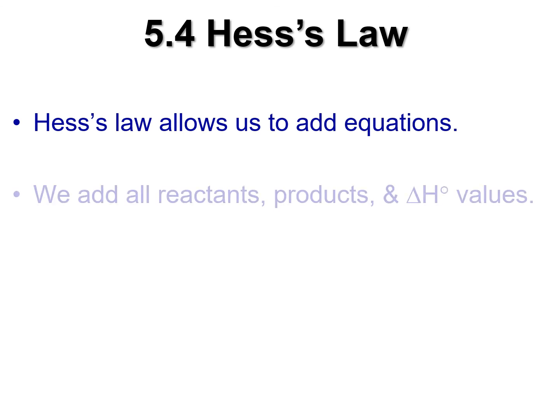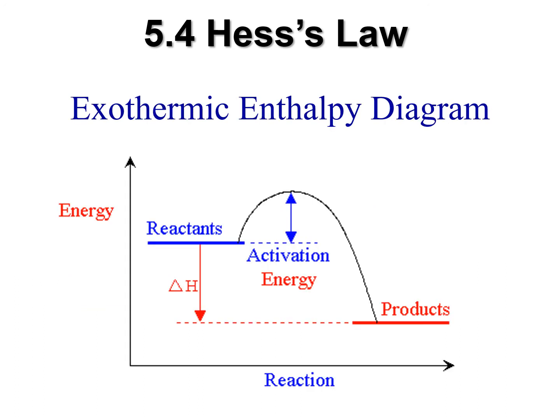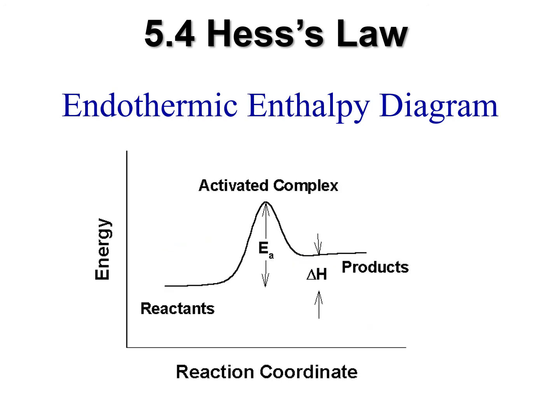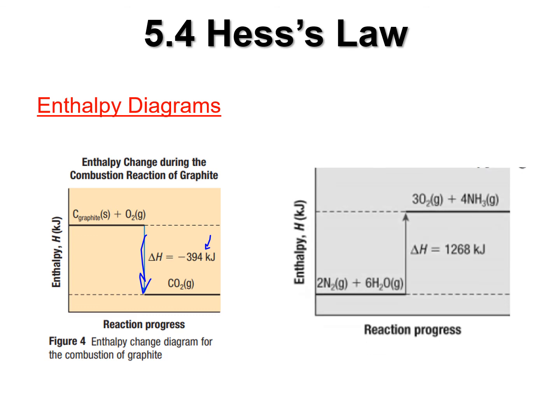So Hess's law allows us to add up these equations. We add the reactants, products, and the delta H values. And we can also show how these steps are added together via an enthalpy diagram. And we've seen these a few times now. So here's an exothermic. Your products have less energy in the system. Again, it's all from the system's perspective here. And there's the endothermic. Now your products have more energy in the system. And here's just probably the one that is easiest to draw for your purposes. You've got your reactants, you've got your products, and you've got your enthalpy here. So this value is negative. So this should be an exothermic process. And here's one that is endothermic.